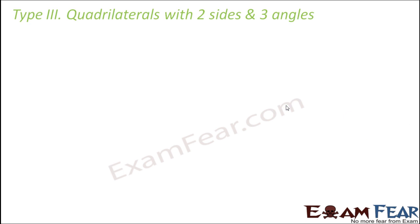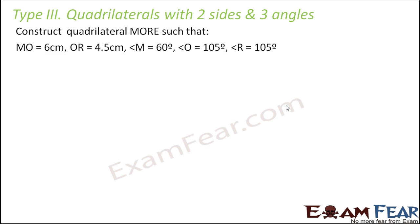In type 3 we will learn to draw quadrilaterals with two sides and three angles. We started with type 1 where we needed measurements for all four sides, and now in type 3 we need only two sides, provided three angles are given. Let's see how we will draw this.